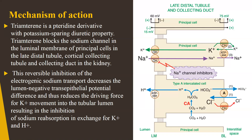In the principal cell, when sodium moves into the cell it disturbs the normal potential difference — positive ions moving into the cell create more negativity outside on the luminal side. To balance this, potassium moves out of the principal cell and cancels out that difference.